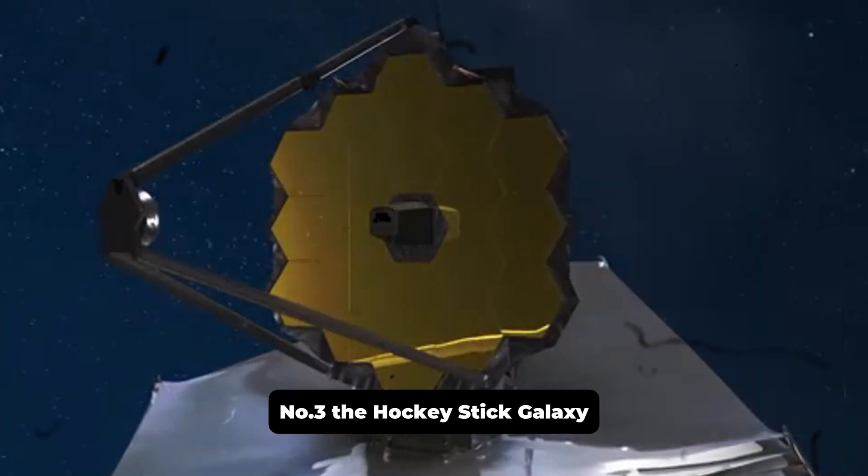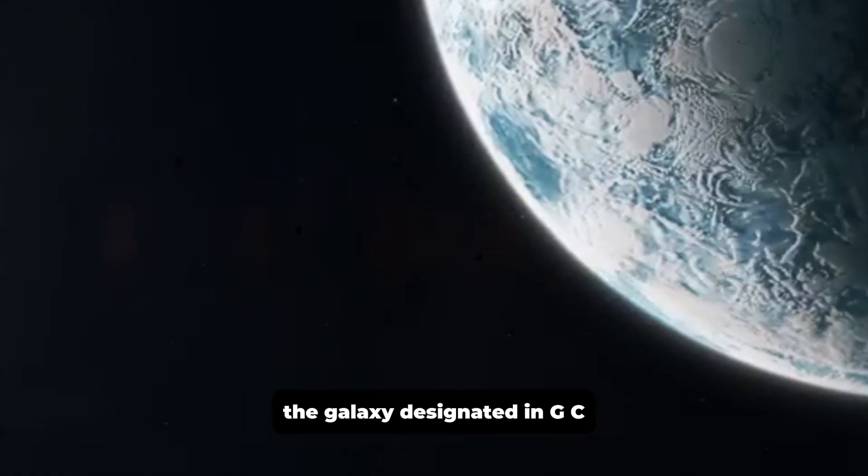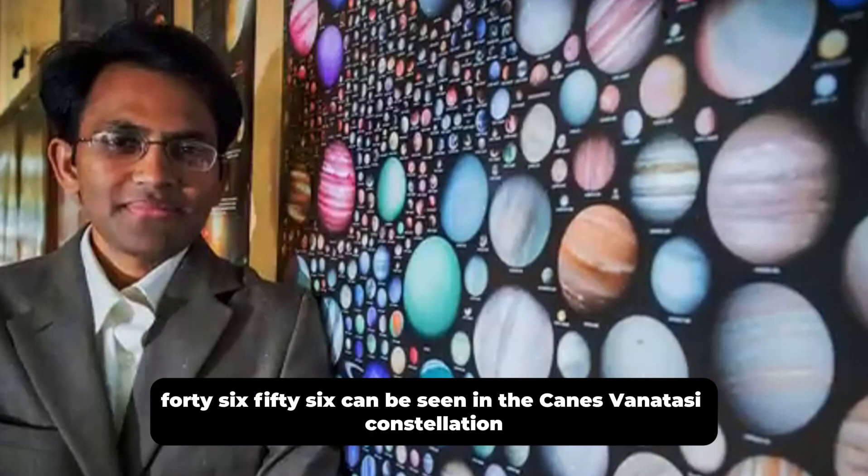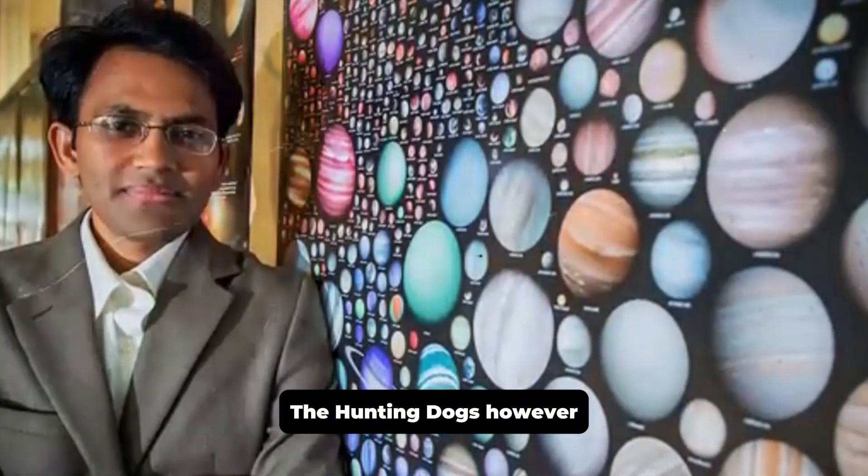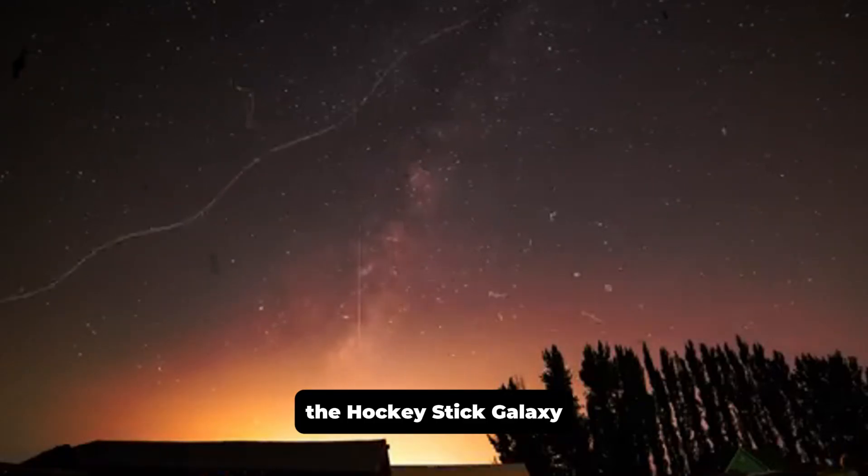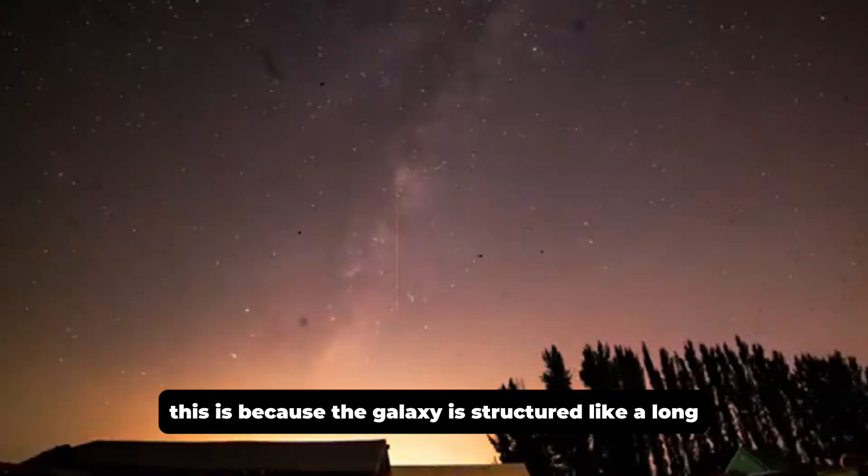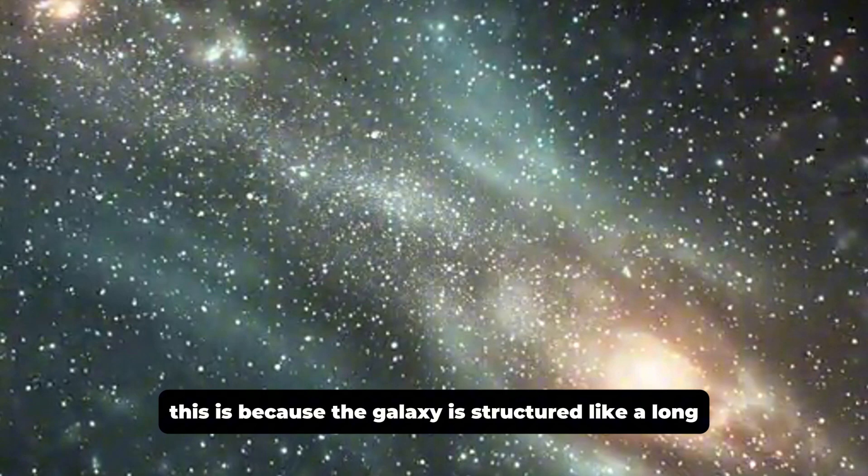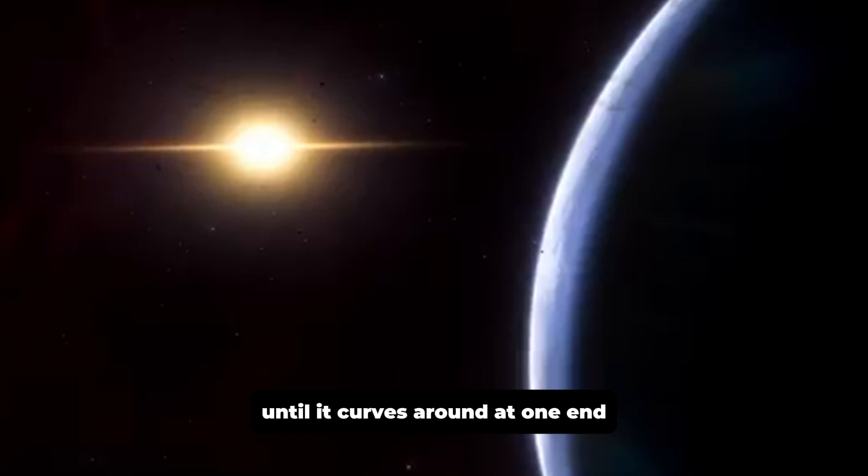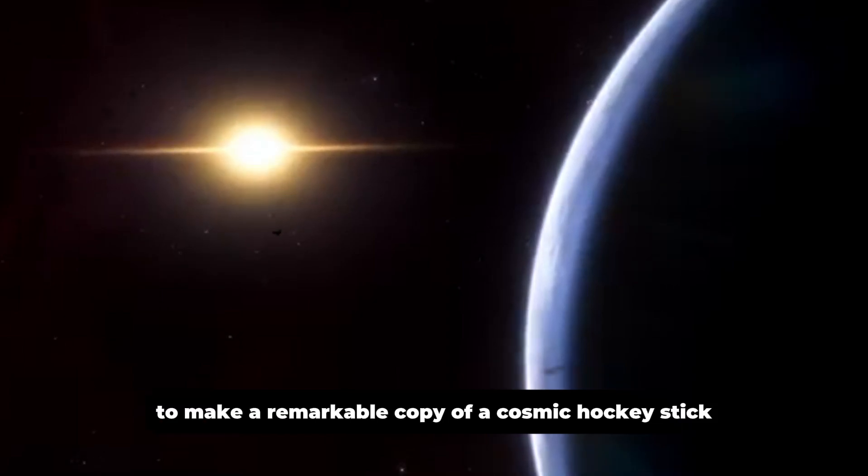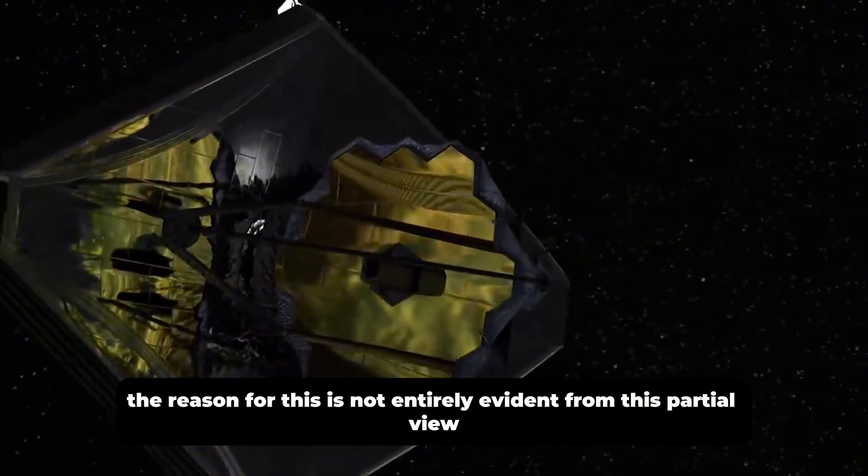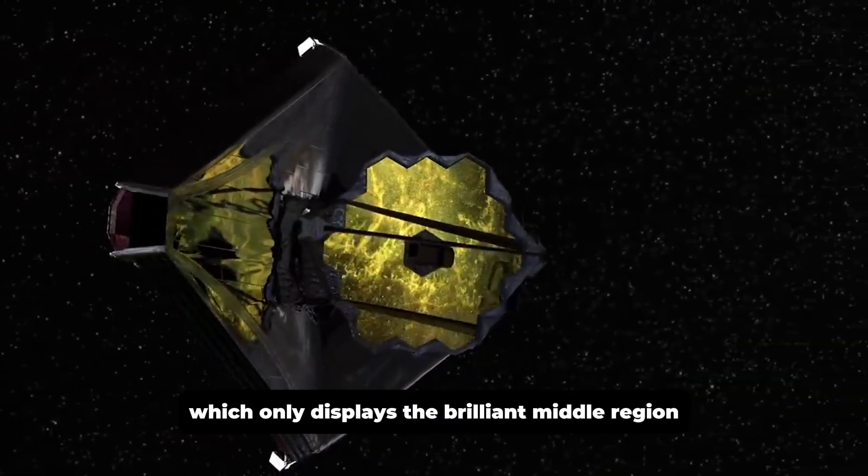Number three, the Hockey Stick Galaxy. The galaxy designated NGC 4656 can be seen in the Canes Venatici constellation, the hunting dogs. However, it is also known by a name that's a little more intriguing, the Hockey Stick Galaxy. This is because the galaxy is structured like a long, twisted stick that stretches out into space until it curves around at one end to make a remarkable copy of a cosmic hockey stick. The reason for this is not entirely evident from this partial view, which only displays the brilliant middle region.